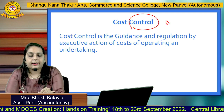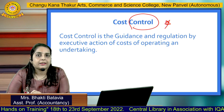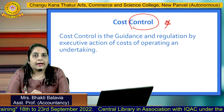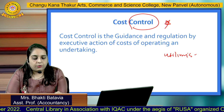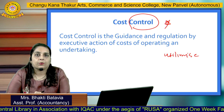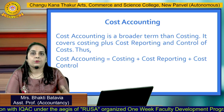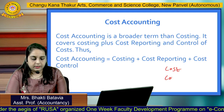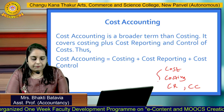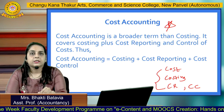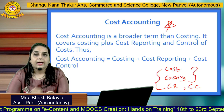After cost reporting, we have Cost Control, which is a very important element. Cost Control is the guidance and regulation by executive action of the cost of operating an undertaking. We control how raw material is utilized for manufacturing the product to minimize cost. Before understanding Cost Accounting, you should understand all four elements: Cost, Costing, Cost Reporting, and Cost Control — then move to Cost Accounting.